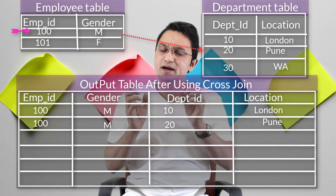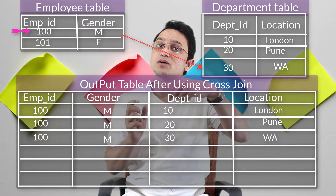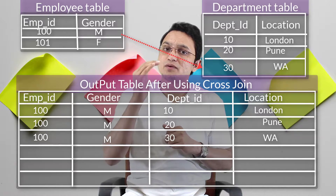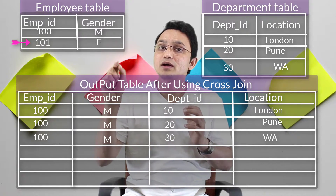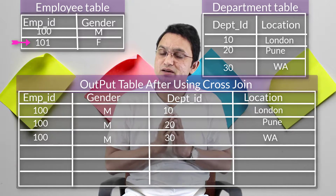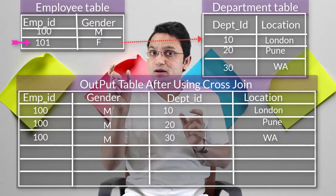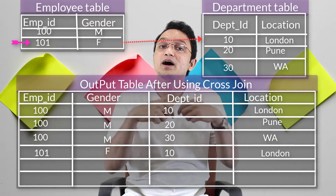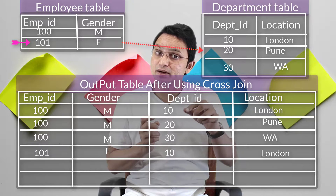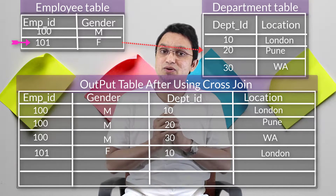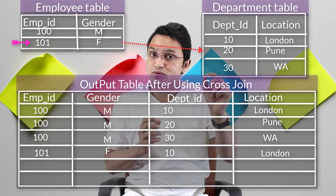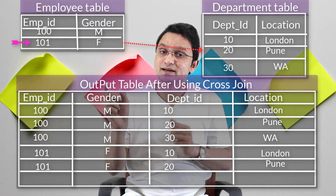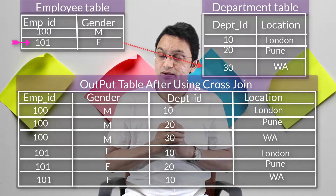The second output row is formed from the first row of the employee table and the second row of the department table. This keeps going until all rows of the department table are finished. Once all rows of the department table are finished, the pointer of the employee table moves to the next row. It then joins the second row of the employee table with the first row of the department table, and the department pointer starts moving again.